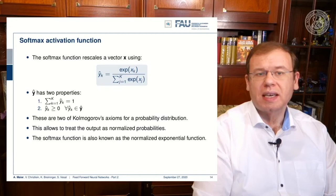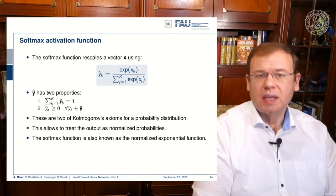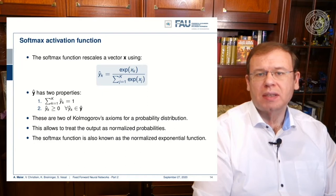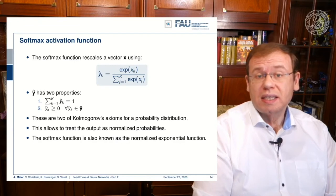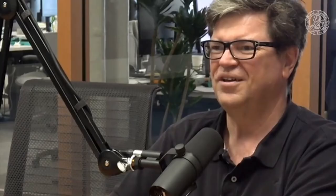These are two axioms of the probability distribution introduced by Kolmogorov, so this allows us to treat the output of the network always as a kind of probability. Machine learning is the science of sloppiness really.